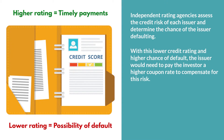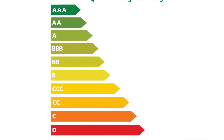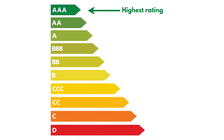Rating agencies assign ratings to each issuer and the bond they are offering. The highest rating is listed as AAA, and lower ratings go down from there to B, C, and D, or default.